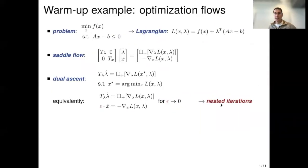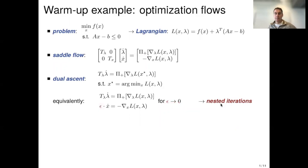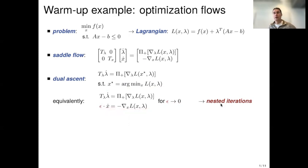You can think of this as the singularly perturbed limit of the saddle flow: to compute that argmin you run a gradient flow on a very fast timescale with time constant epsilon, and as epsilon goes to zero you recover computing the argmin. If you implement this in discrete time, you have to run a whole bunch of gradient descent iterations to compute the argmin of the Lagrangian, then do one update step of the dual variable, and again run many iterations for the primal — so you run into nested iterations.